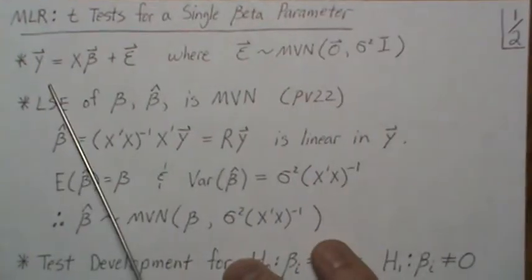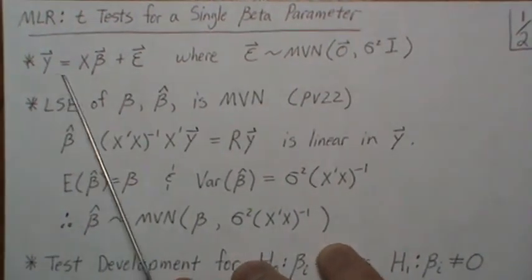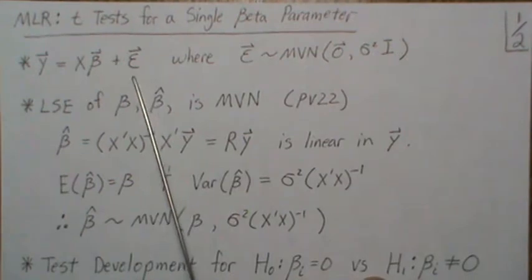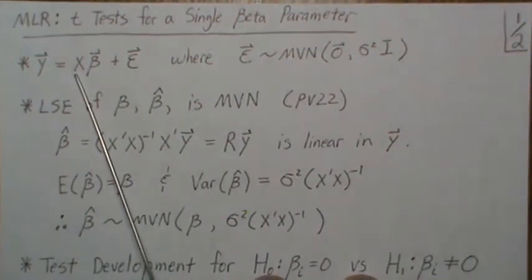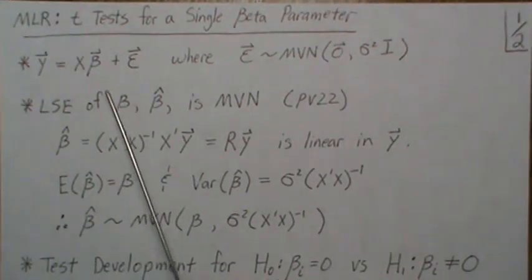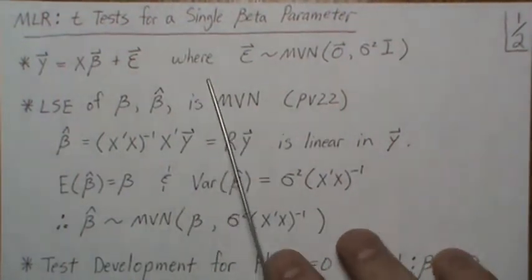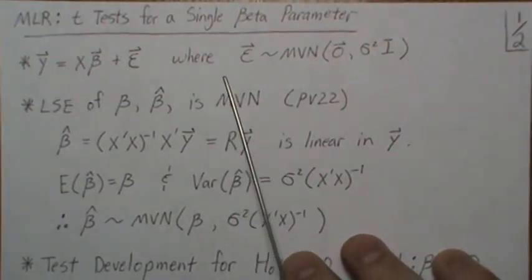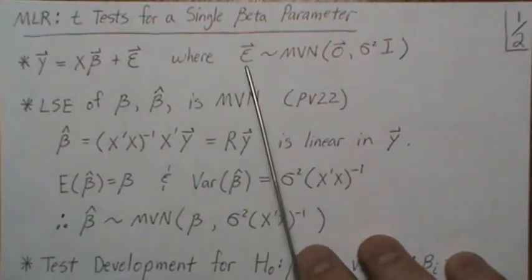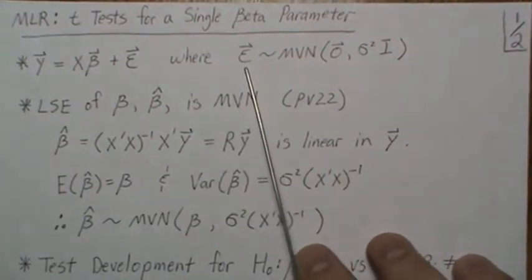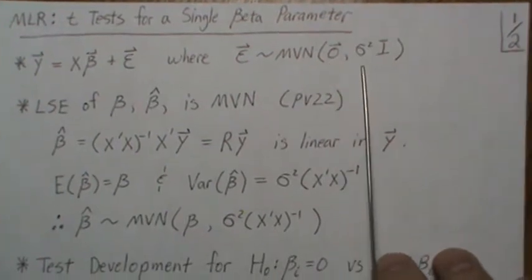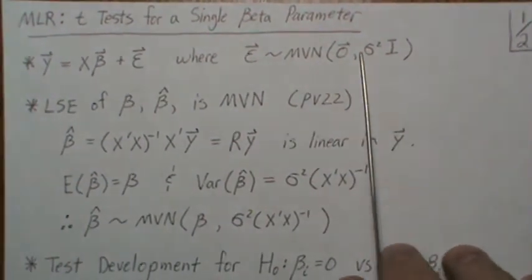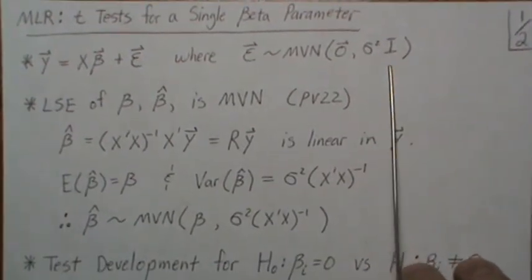Here's the multiple linear regression model: y equals X beta plus error. X is the design matrix, this is a vector of parameters of interest. Since we're going to do a test, we have to make distributional assumptions, so we're going to assume that the epsilon terms, or error terms, are multivariate normal with mean zero and constant variance sigma squared, and variance covariance matrix sigma squared I.